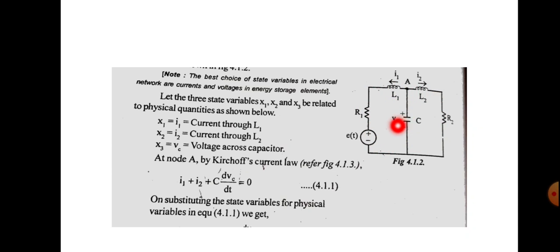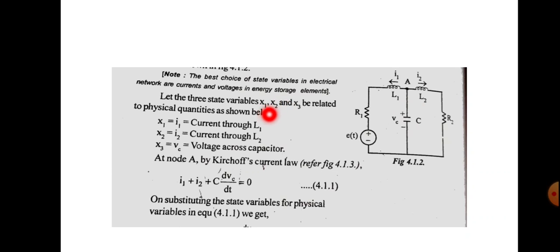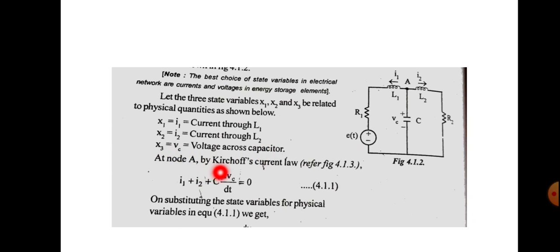The best choice of state variables in an electrical network are the currents and voltages in the energy storage elements. We represent these as: x1 corresponds to i1, x2 corresponds to i2, and x3 corresponds to Vc. So the current through L1 is x1, the current through L2 is x2, and the voltage across the capacitor Vc equals x3.